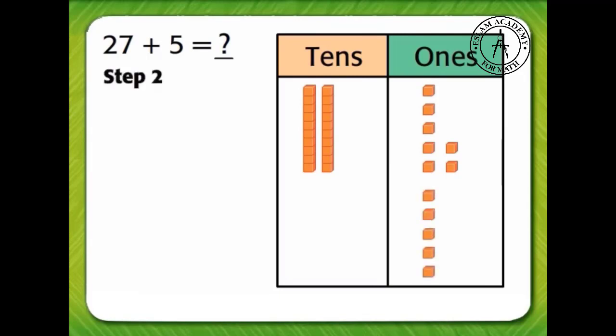Next, if there are 10 or more ones, regroup 10 ones as 1 ten. There are 12 ones, so we can regroup 10 ones as 1 ten and place 1 ten in the tens section of the work mat.